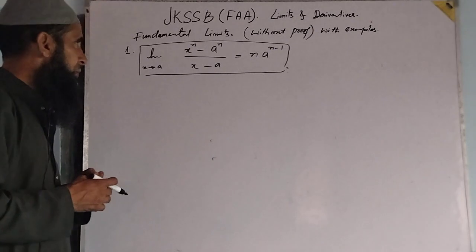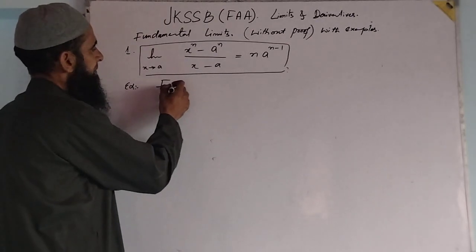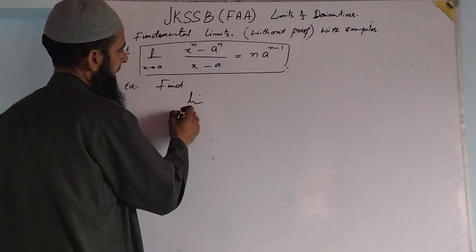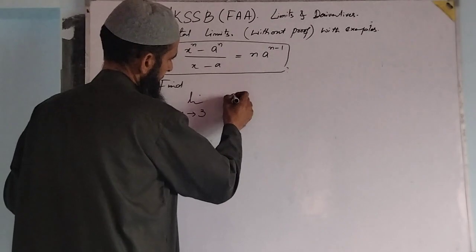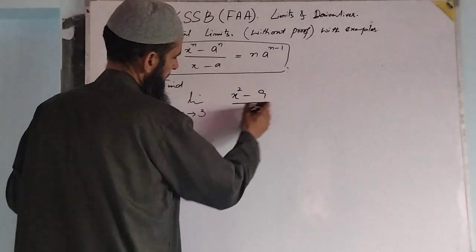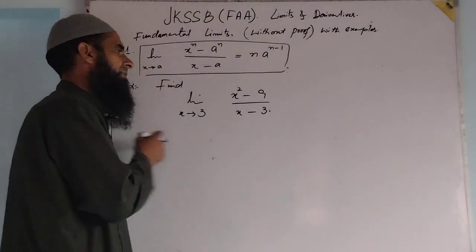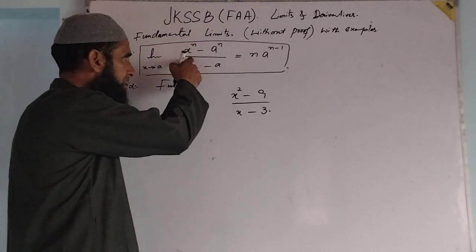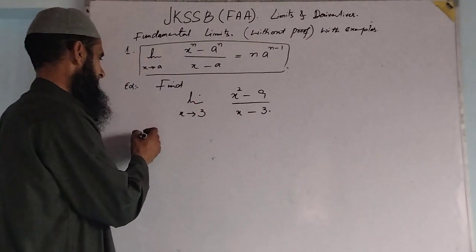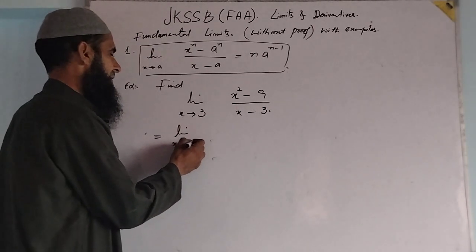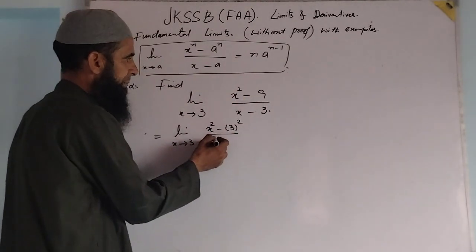Now we will use this fundamental limit in an example. Find the limit as x tends to 3 of x squared minus 9 over x minus 3. By using this fundamental limit, we can simplify this easily. This can be written as limit x tends to 3 of x squared minus 3 squared, where 3 squared is 9, divided by x minus 3.